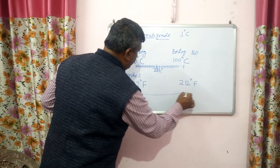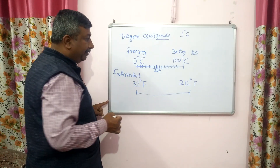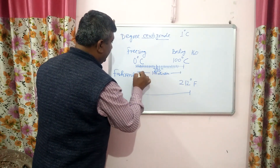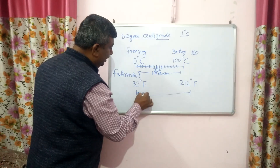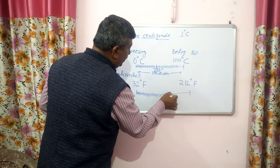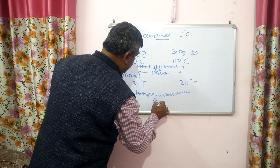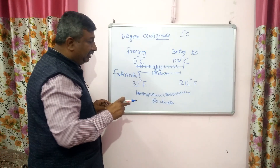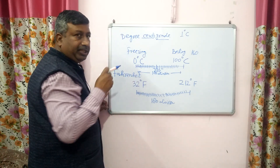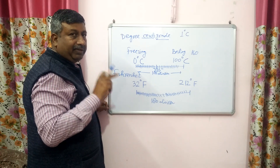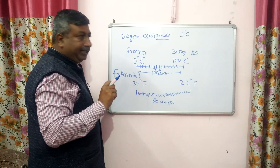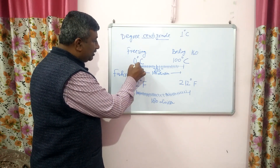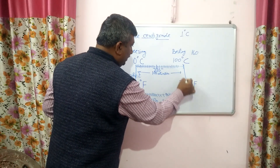From 32 to 212, Fahrenheit made 180 divisions. In centigrade there were 100 divisions, but in Fahrenheit there are 180 divisions. One degree Fahrenheit is the 1/180th difference between the freezing and boiling point. The reference points are the same for both scales — freezing point and boiling point.